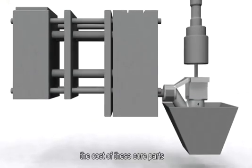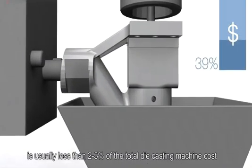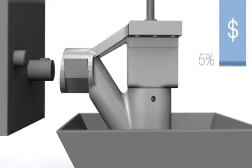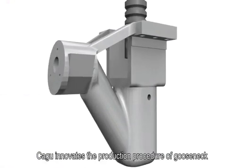The cost of these core parts is usually less than 2-5% of the total die-casting machine cost. Kagu innovates the production procedure of gooseneck.